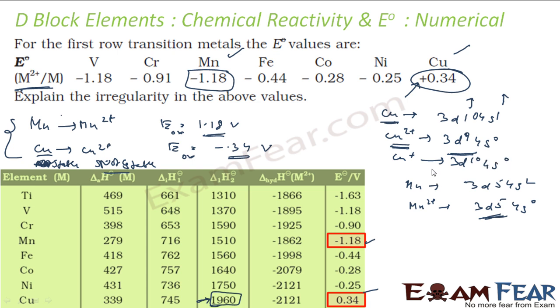Cu⁺ ion electronic configuration is 3d¹⁰ 4s⁰. From this, if you want to pluck one electron, it becomes 3d⁹ 4s⁰, which is unstable. So it will be difficult to pluck one electron from Cu⁺ to Cu²⁺. That means the second ionization energy of copper will be high, and that's why this value comes out to be positive.